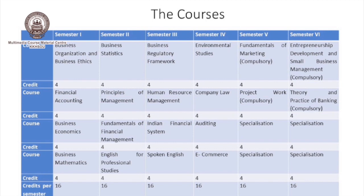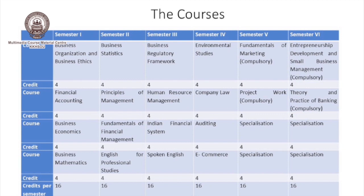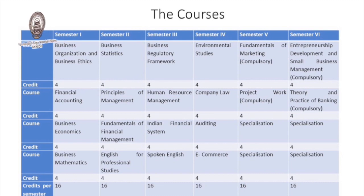From the fifth semester, learners will get specialization and have to opt for it. There will be two compulsory papers and two papers from the specialization. The compulsory papers are Fundamentals of Marketing and one Project Work. In the Project Work there will be no theoretical component; learners have to conduct a study, prepare a report, and appear for a Viva.